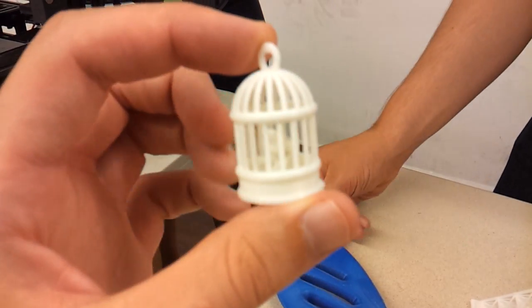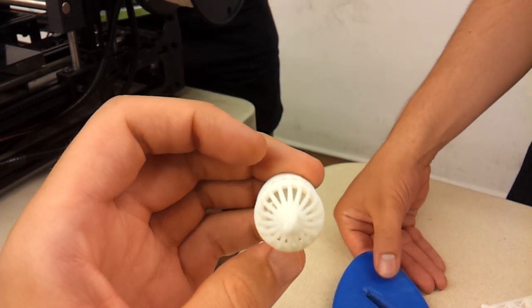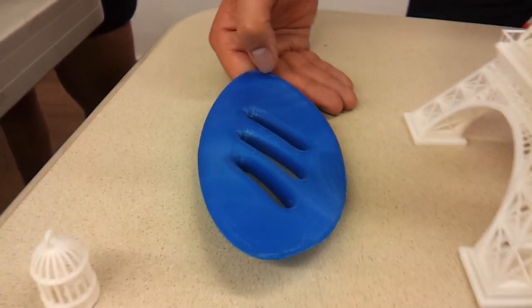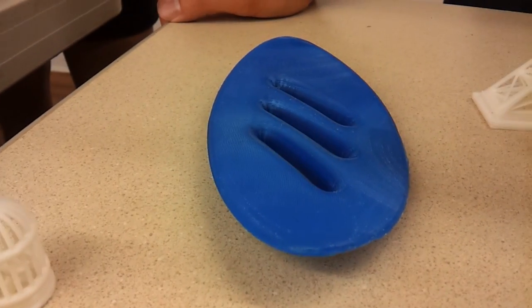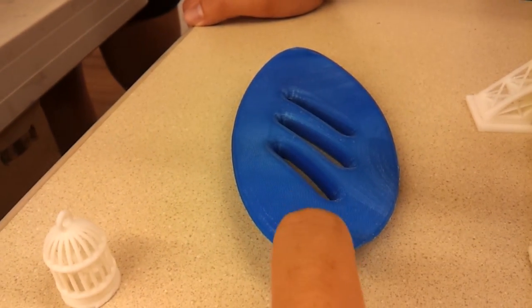So something like this, this was about a 20-plus hour print at 50 micron layers. This would obviously be about a quarter of the time at the default 200-micron resolution. So this is at 50 microns? And this one is 200. 200? Okay.